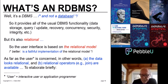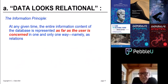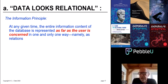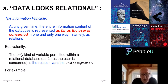Let me elaborate on those two points. First, the data looks relational. There's something in the relational world you've probably heard of called the Information Principle, which says everything is relations. At any given time, the internal information content of the database is represented, as far as the user is concerned, in one and only one way — namely as relations. Down on the disk there's hashing, indexes, pointer chains, compression, and so on, but that's all under the covers. At the user interface, what you see is relations and nothing but relations. The only kind of variable allowed within a relational database, as far as the user is concerned, is specifically the relation variable.